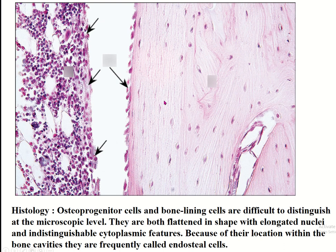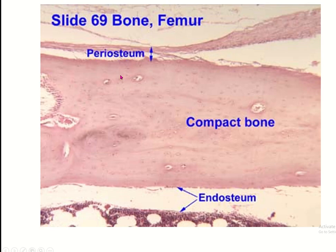The histology of the endosteum shows a single layer of osteoprogenitor cells. The periosteum is located on the outer part of the bone, while the endosteum is located on the inner part of the bone.